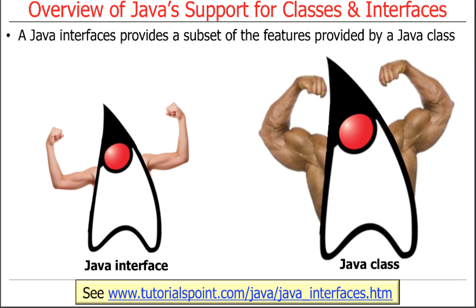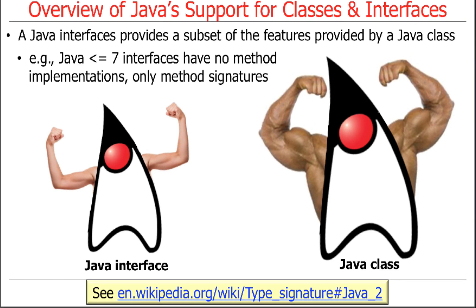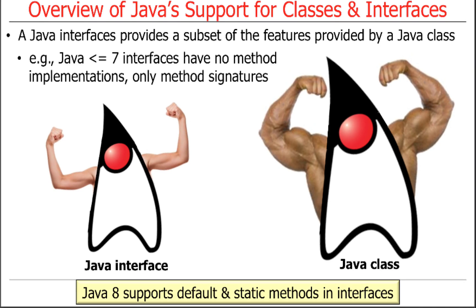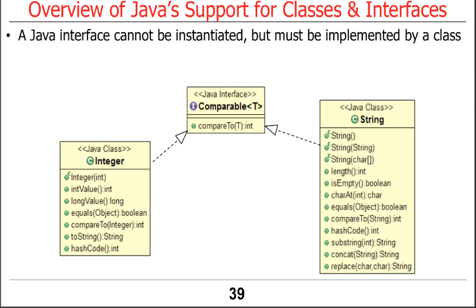If the Java class is pumped up on steroids, the Java interface is like the scrawny little brother that doesn't have all the features of the class. In Java 7 and earlier, an interface couldn't have implementations of methods — only the signatures. Java 8 adds something called default methods, which allow interfaces to have default implementations if a class does not implement them when it implements the interface. That turns out to be wildly important for things we'll talk about later. Also, you can't instantiate a Java interface — you have to implement it first.